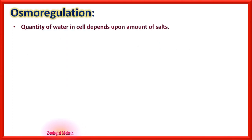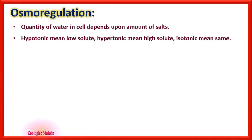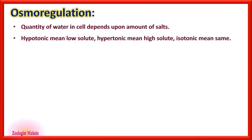The quantity of water in cells depends on the amount of salt. If a cell has a high amount of salt, water moves inside; if low salt concentration inside, water is discharged outside. Hypotonic means low solute but high water; hypertonic means high solute but low water; isotonic means almost the same water concentration outside and inside.